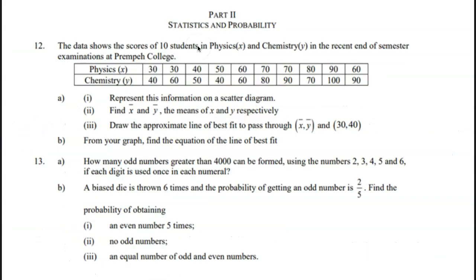So let's look at questions under statistics and probability. The data shows the scores of 10 students in physics and chemistry in the recent end of semester examination at Premier College. The table is there. Part A: Represent this information on a scatter diagram.